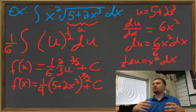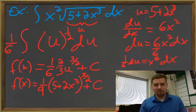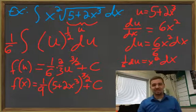You can verify that by taking the derivative — you should end up at x squared times the square root of (5 plus 2x cubed). And that's it for undoing the chain rule, what we call the chain rule relinked. Thanks for taking my class.